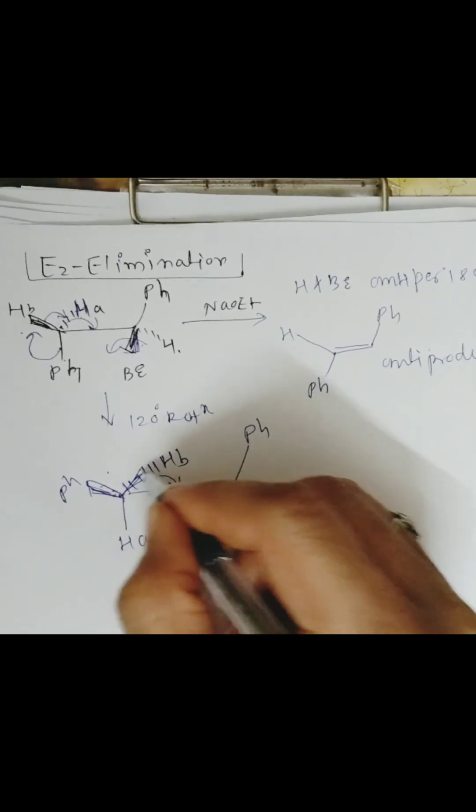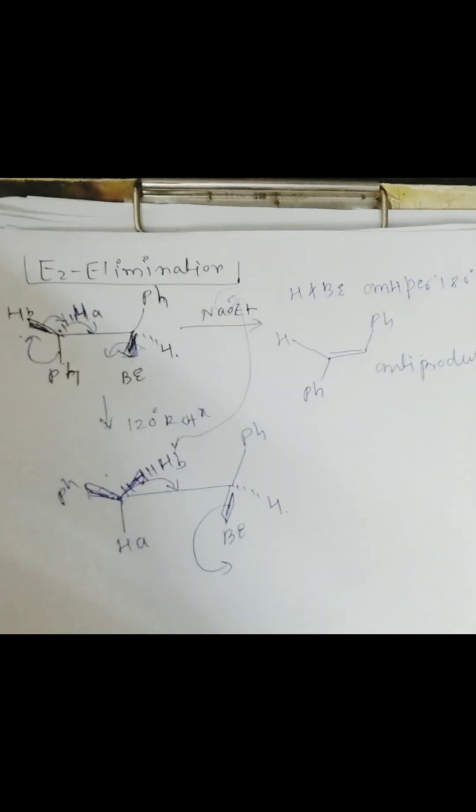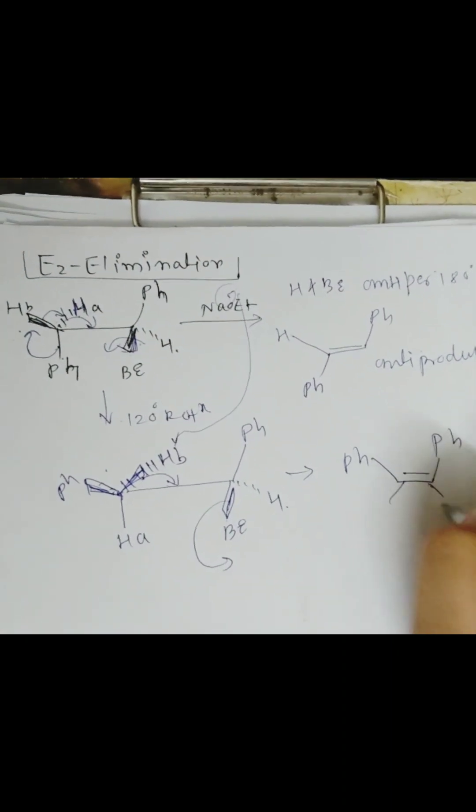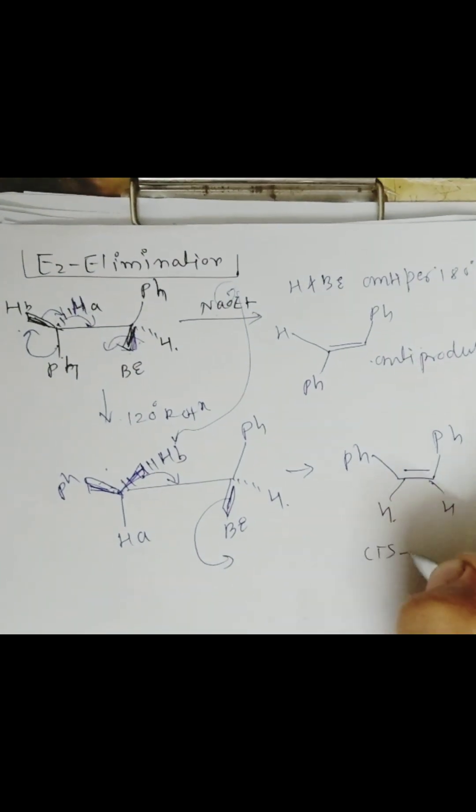In this case, the base will abstract the Hb proton which is below the plane. This bond will shift and the bromine will leave, forming the syn product. In the first case anti-product formed, and in this case the syn product is formed.